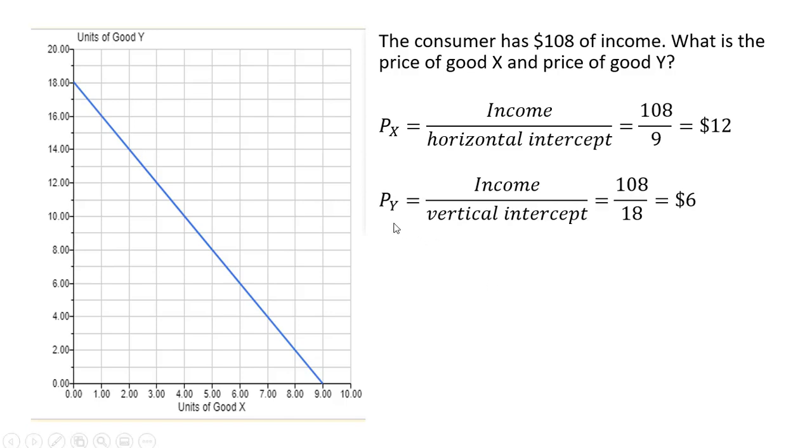The price of good Y can be calculated as the consumer's income divided by the vertical intercept. In this case, the vertical intercept is 18. So 108 divided by 18 gives us a price of good Y of $6. You'll also note if we take 6 and multiply it by 18, we get back to our $108 of income.